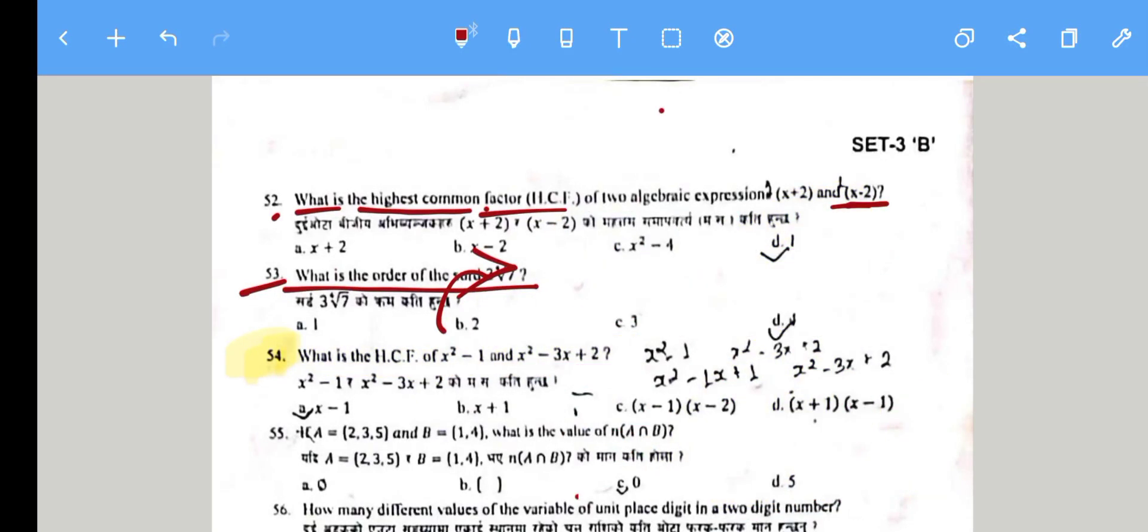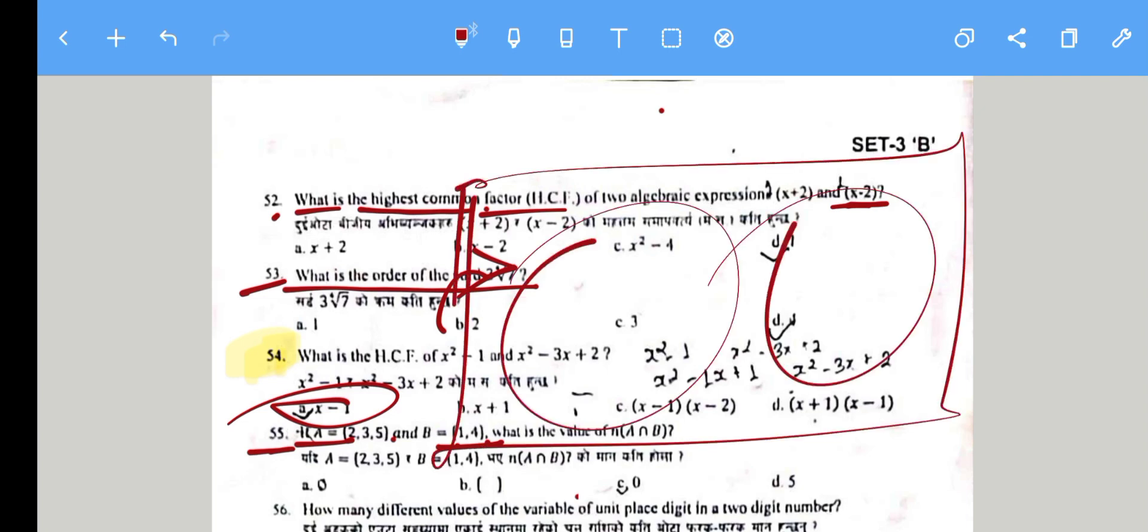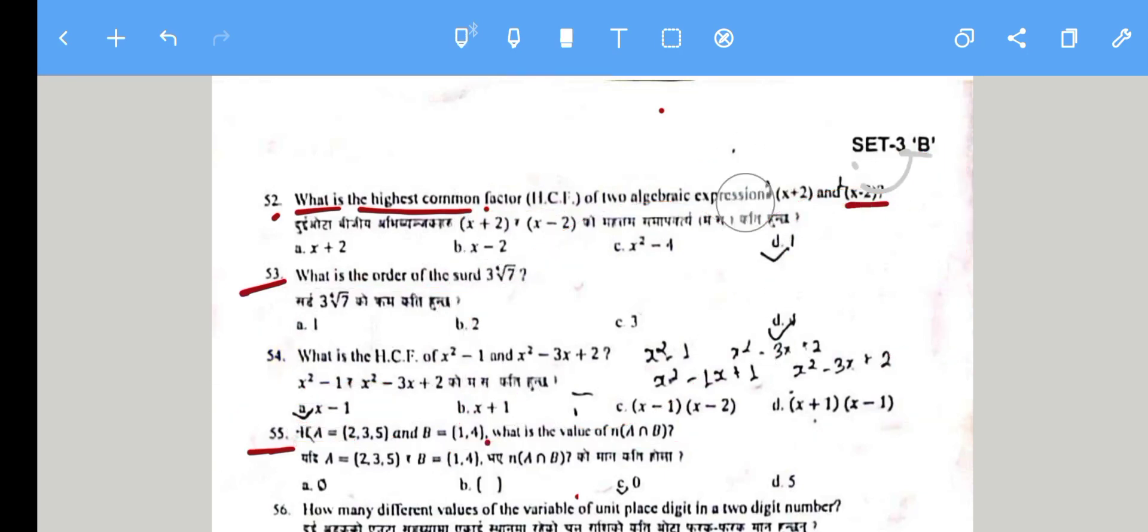Question 55: If A = {2,3,5} and B = {1,4}, what is A intersection B? Since the two sets have no common elements, the intersection is the null set (empty set). So option A is correct.